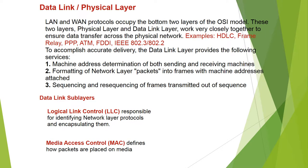The Data-link layer and Physical layer occupy the bottom two layers of the OSI model. LAN and WAN protocols occupy these bottom two layers. The physical layer and data-link layer work very closely together to ensure data transfer across a physical network.